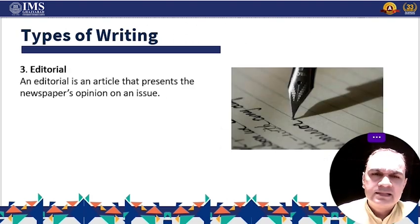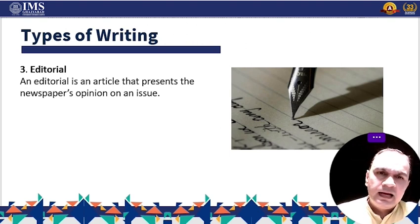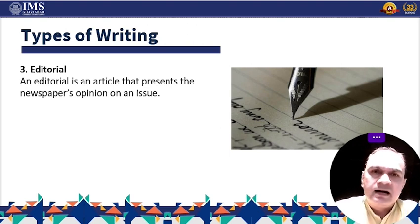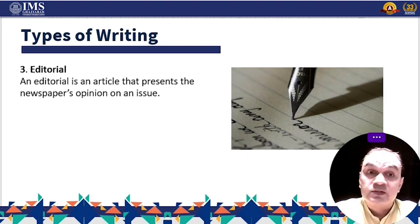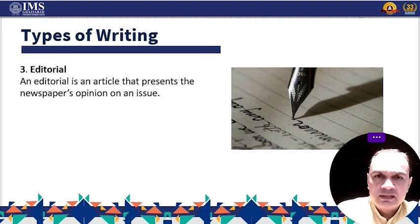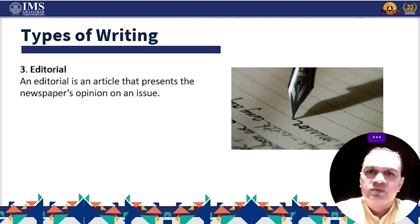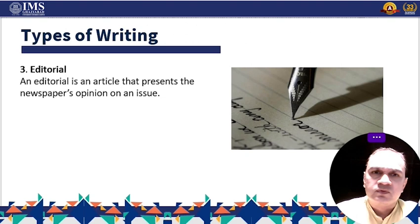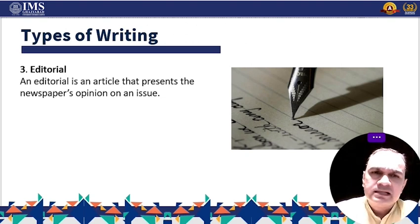Next is editorial writing. An editorial is an article that presents the newspaper's opinion on an issue. It reflects the majority votes of the editorial board, the governing body of the newspaper, made up of editors and business managers. It is usually unsigned.